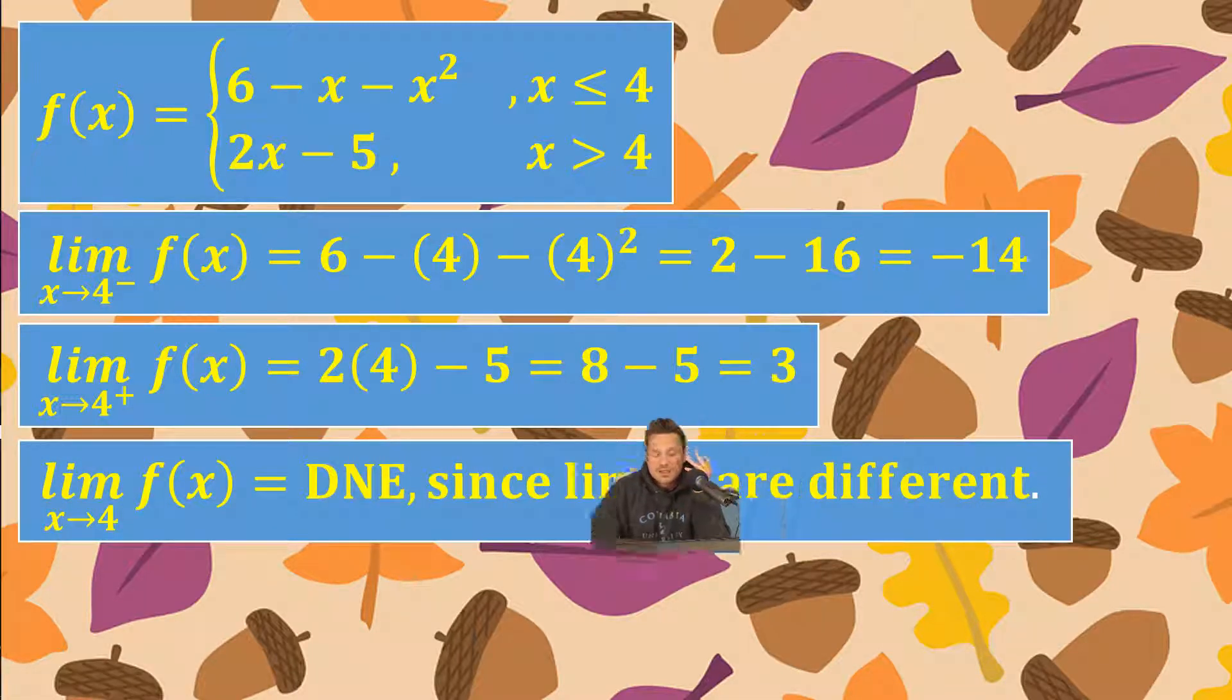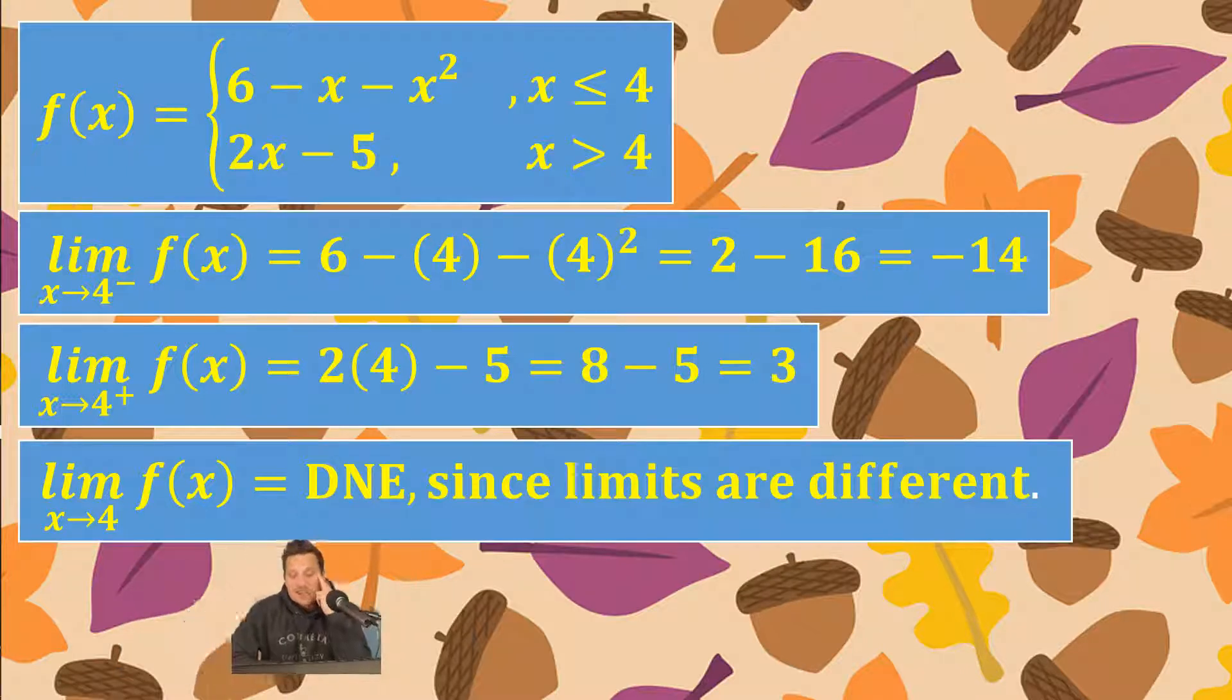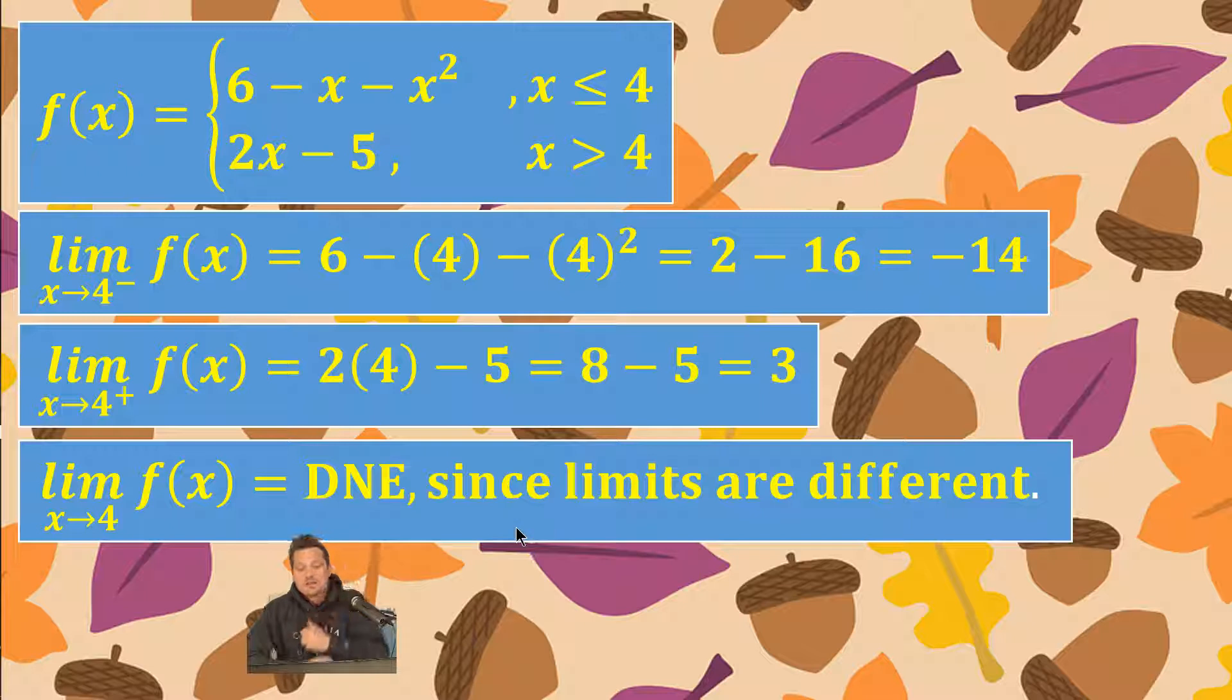The limit of f of x as x approaches 4 does not exist. The value of the limit does not exist since the limits are different. Limits from the right and the left have different values, so the limit overall does not exist.